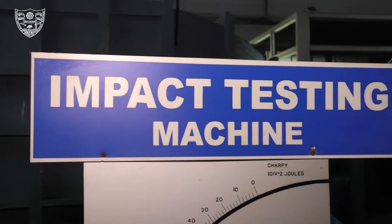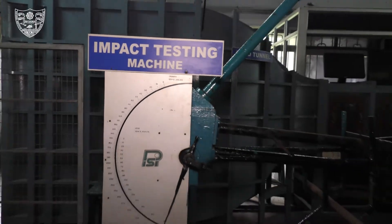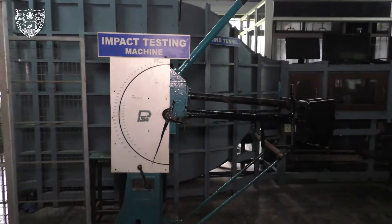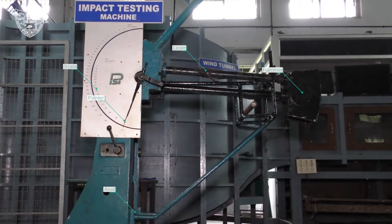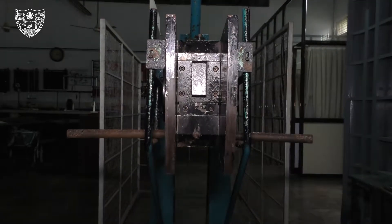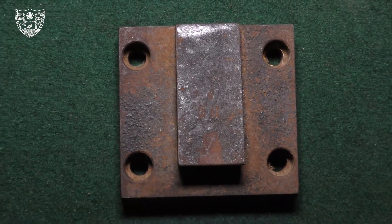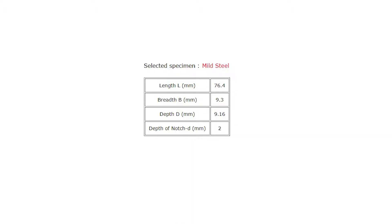IZOD Impact Test. This is the experimental setup. The objective of IZOD Impact Test is to find the impact resistance of mild steel specimen. Mild steel specimen with V notch and the standard dimension is shown here.